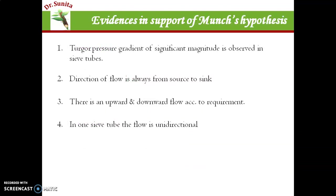There are many evidences in support of the Munch hypothesis. First evidence: turgor pressure gradient magnitude — जो magnitude turgor pressure का है, वो काफी large है, such that the flow can be created. Next, direction of flow is always from source to sink — क्योंकि source पे लगातार solute की synthesis होती है, concentration बढ़ती है, और sink पे लगातार consumption होता है, concentration कम होती है — एक concentration gradient बन जाता है, जिससे flow हमेशा source to sink रहता है.